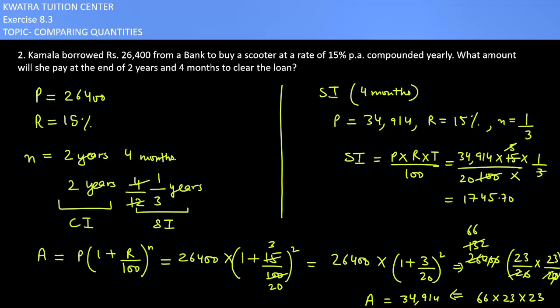How much is the total amount? First we have calculated that 34,914 plus 1,745.70. Adding both of them will give you 36,659.70. So that's the answer for the second one. Thank you.